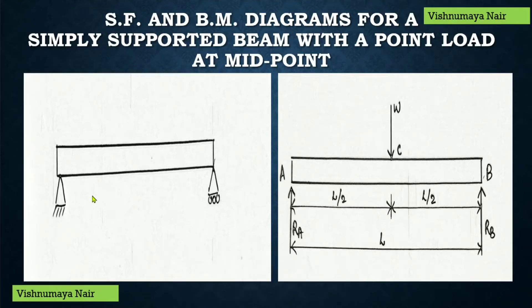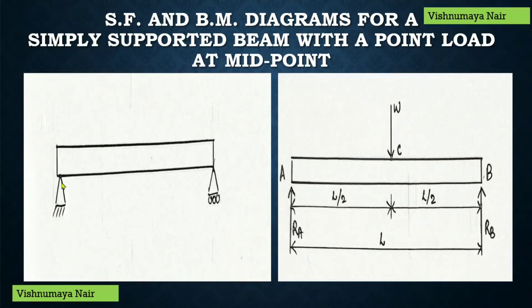Let's see what is meant by a simply supported beam. A beam which is supported or resting freely on the supports at its both ends is known as a simply supported beam. A simply supported beam will have a hinge support at one end and a roller support at the other end, like this.